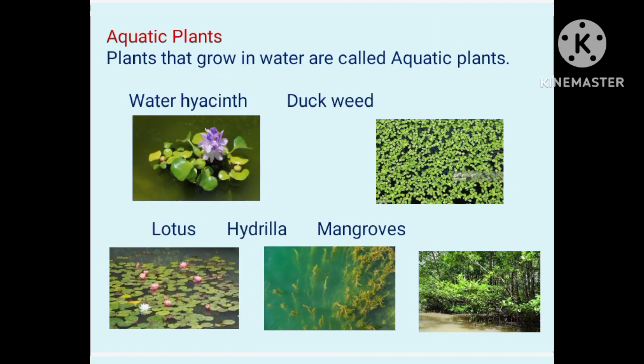The plants that grow in water are called aquatic plants. Here we can see pictures of aquatic plants: water hyacinth, duckweed, lotus, hydrilla, and mangroves.